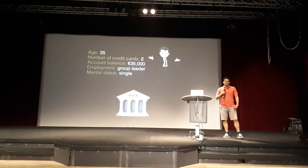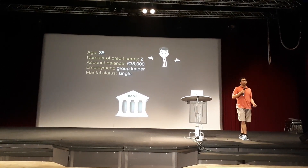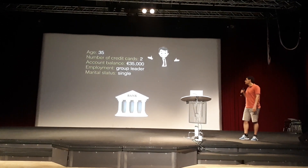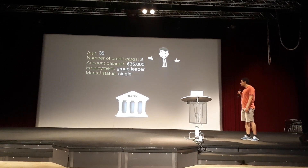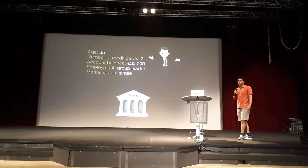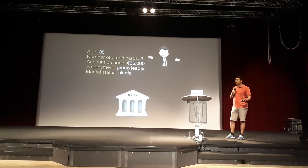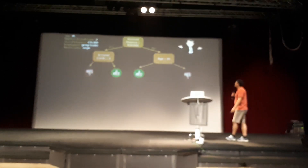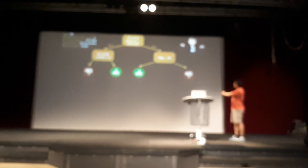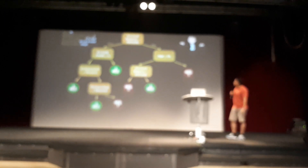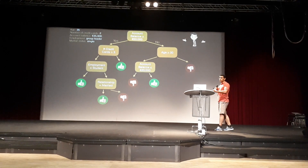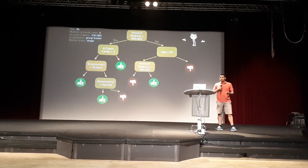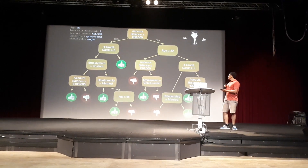The bank, having access to troves of historical data on customers similar to Edward, decides to train and employ a machine learning-based system to decide whether to grant him the loan or not. The system may look something like this. If we follow the paths in the tree, we can see that in this system Edward will be granted the loan. However, as the bank collects more data, the system grows and may look something like this, or perhaps something like this.